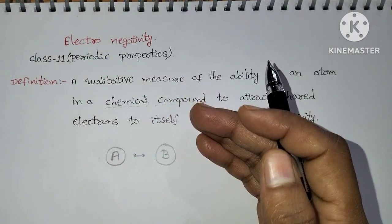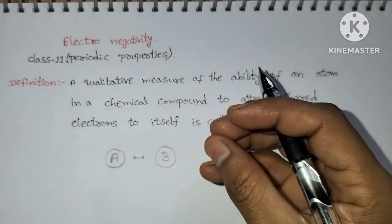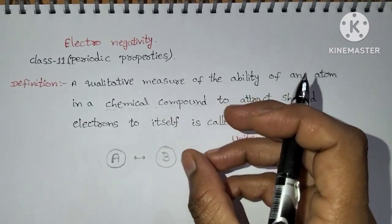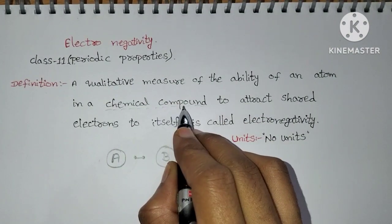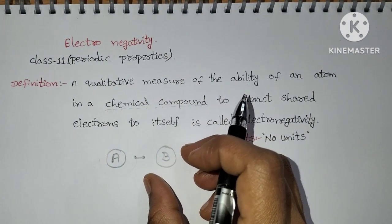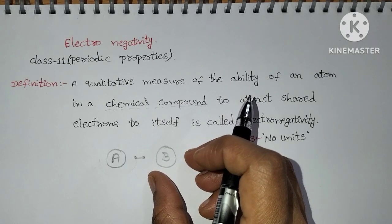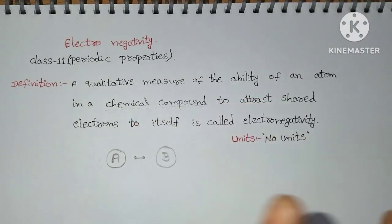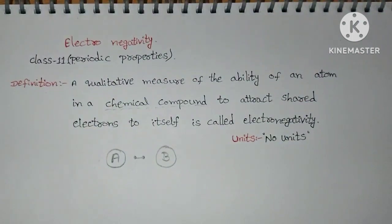Generally, how are compounds formed? By forming chemical bonds between atoms, chemical compounds will form. So here we are not using an isolated neutral gaseous atom — we are using a chemical compound to explain this concept.